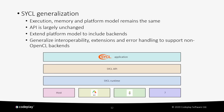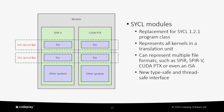The first proposal was SYCL generalization — generalizing SYCL to support non-OpenCL backends. The execution, memory, and platform models would remain the same and the API would be largely unaffected, but the platform model would be extended to support multiple backends, not just OpenCL. Next are SYCL modules, not to be confused with C++20 modules. Modules are a replacement for the SYCL 1.2.1 program class. A module represents all kernel functions in a translation unit and can contain multiple file formats such as SPIR, SPIR-V, PTX, or even a vendor-specific instruction set. The interface is also now typesafe and threadsafe.